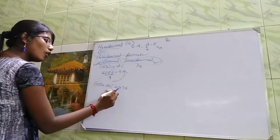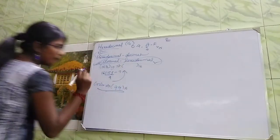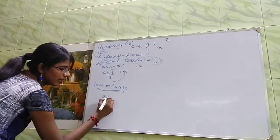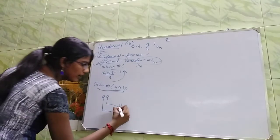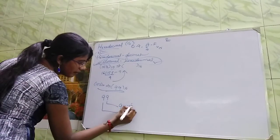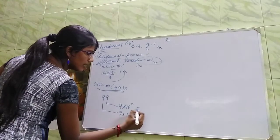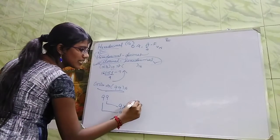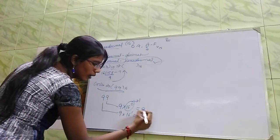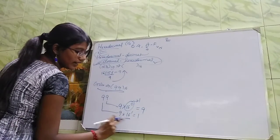What about hexadecimal to decimal? OK, I have to convert it. I have to use 99. 9 into 16 power 0, 9 into 16 power 1. Anything power 0 is 1, so 9, and then 9 into 16.